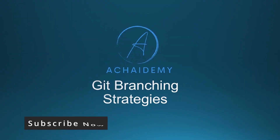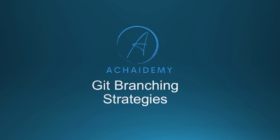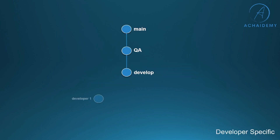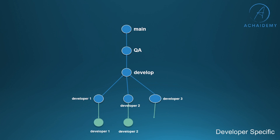In this section we will look into the first branching strategy which you can apply in your team. This is the simplest strategy, called developer-specific branching. With the bare minimum strategy applied, with the main, QA, and develop branch already available in the developer-specific scenario.